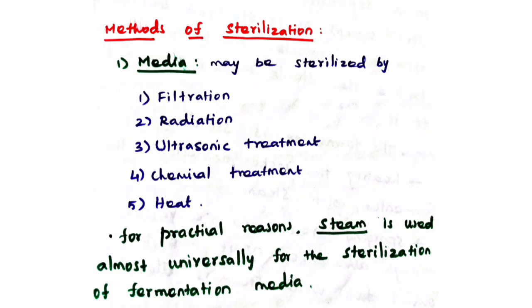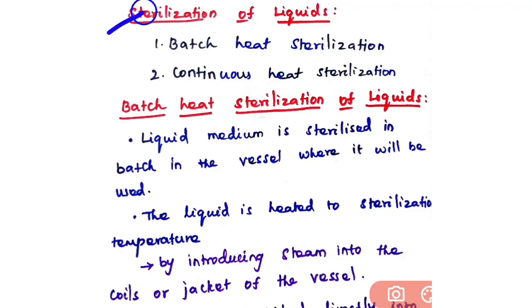Media may be sterilized by filtration, radiation, ultrasonic treatment, chemical treatment, or heat method. However, for practical reasons steam is used almost universally for the sterilization of liquid media. The major exception is filtration, mostly used for media containing heat-labile compounds — such as media used for animal cell culture — where steam would destroy those heat-labile components. In steam sterilization there are two types: batch heat sterilization and continuous heat sterilization.